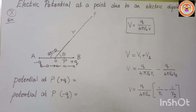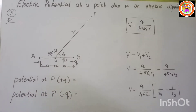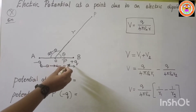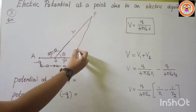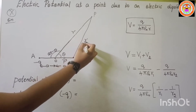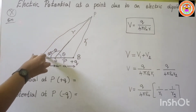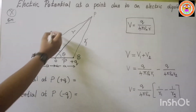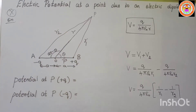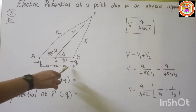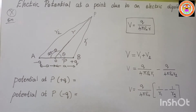For the derivation, first I am going to calculate the potential at point P due to the positive charge, and second, the potential at point P due to the negative charge. The distance from plus q to point P is taken as r1, and the distance from minus q to point P is taken as r2.